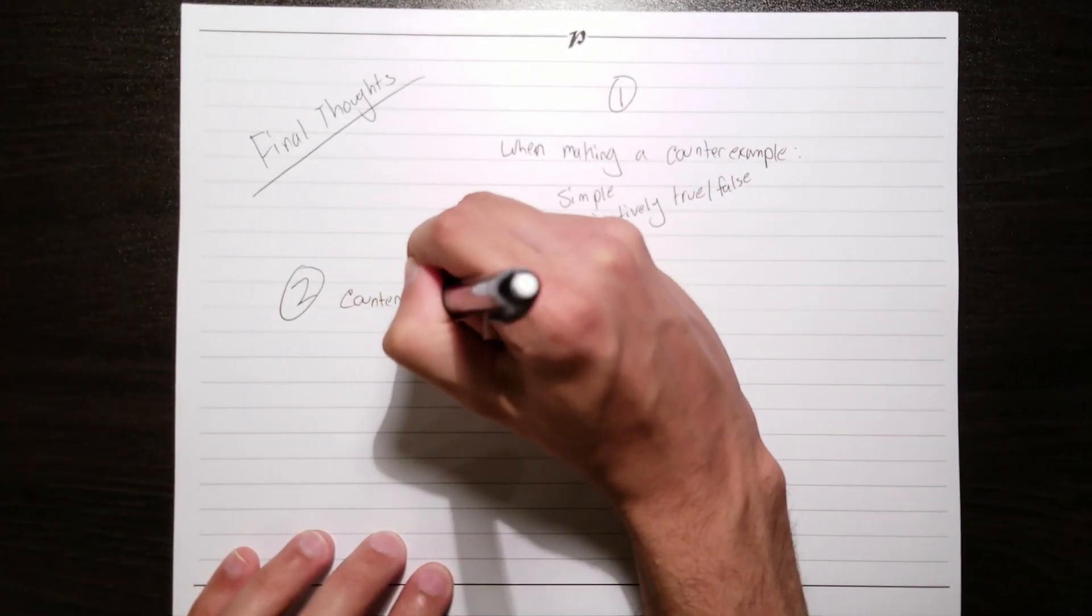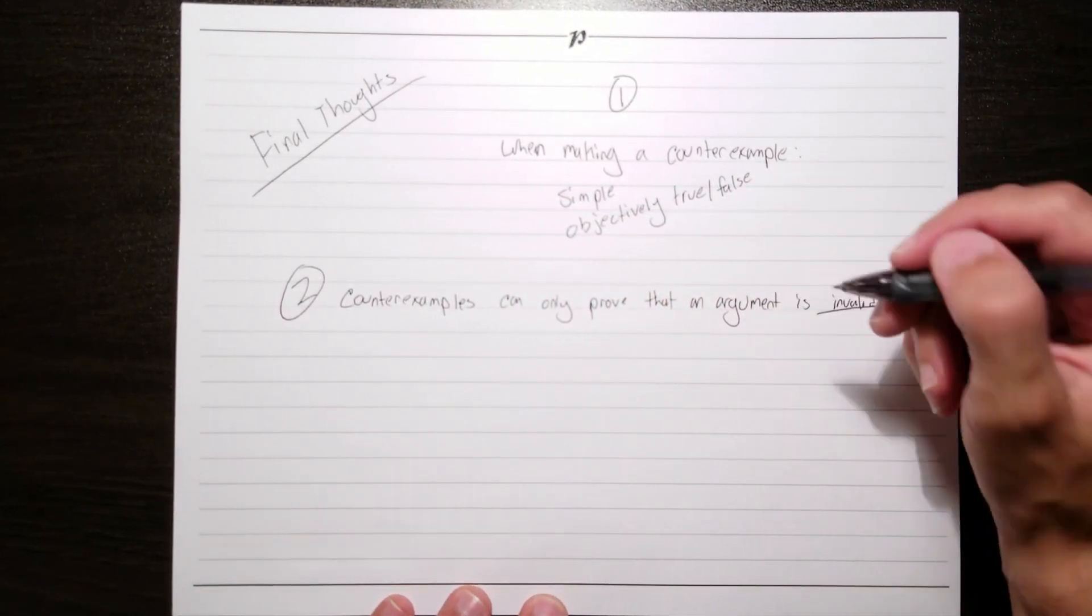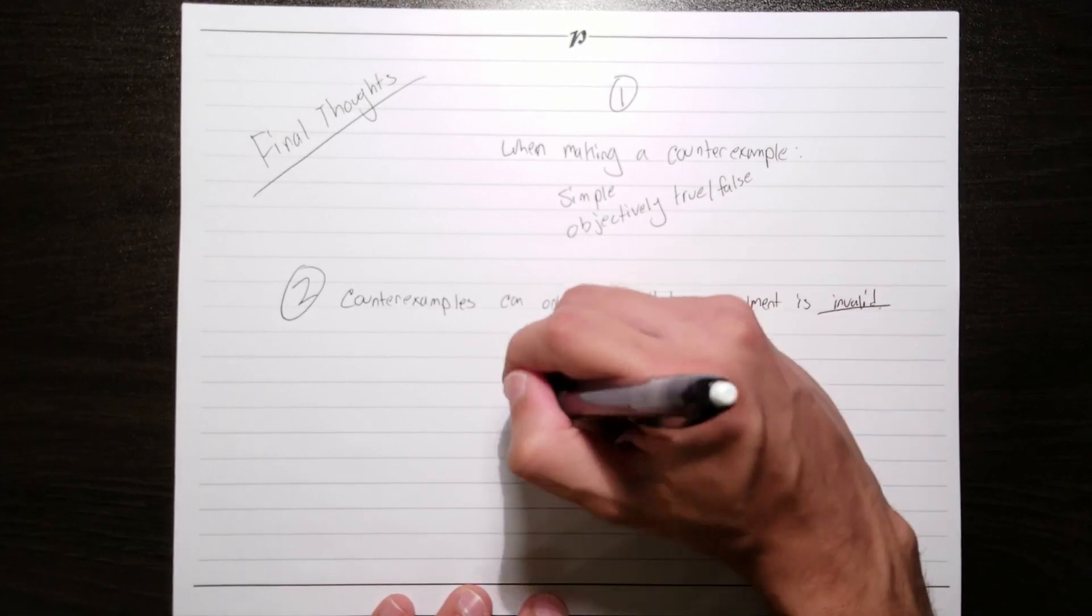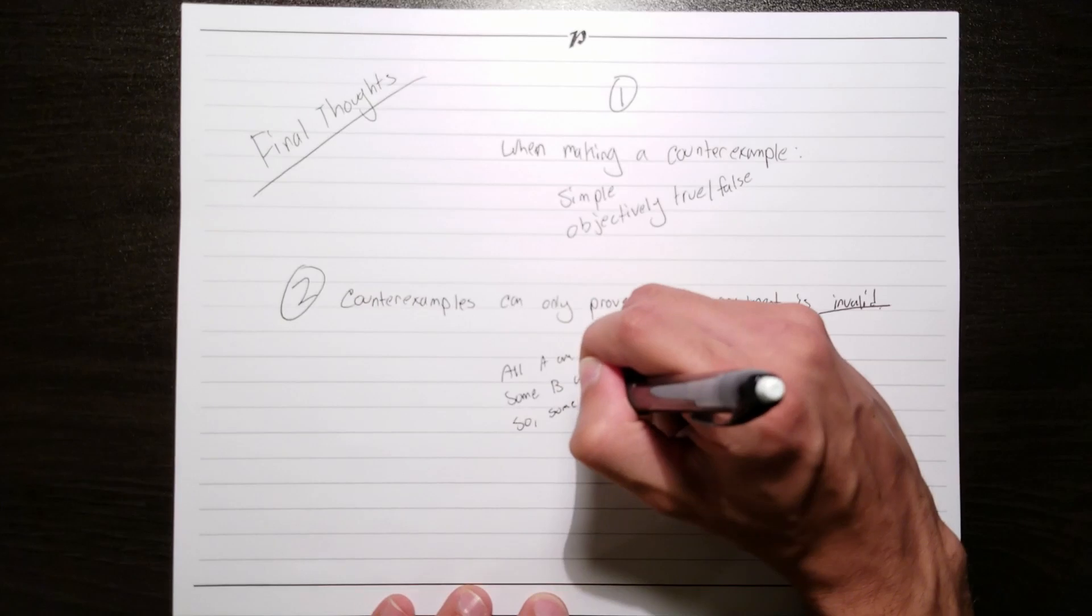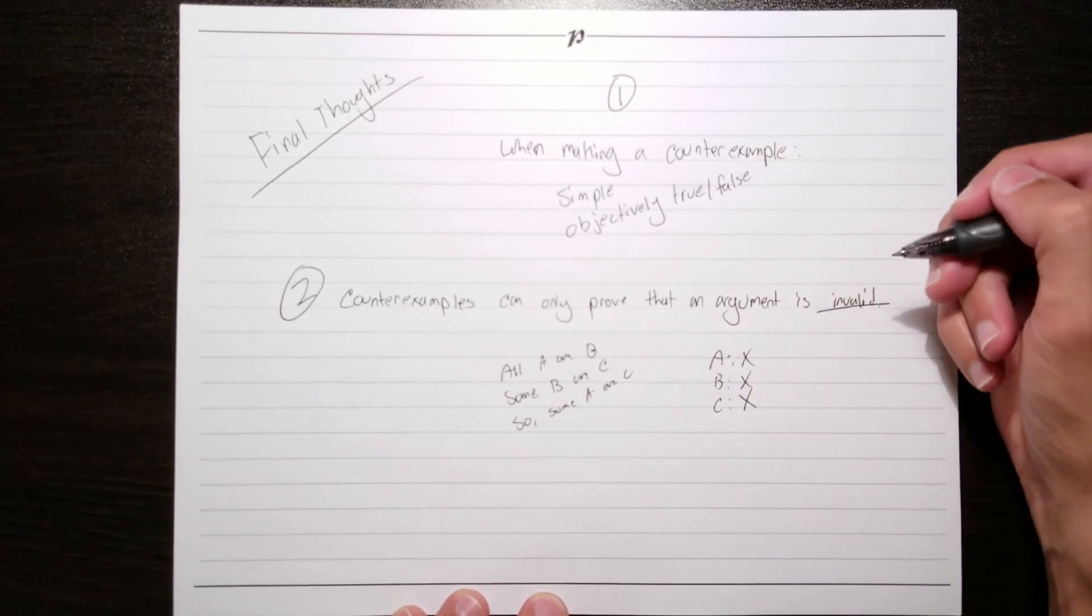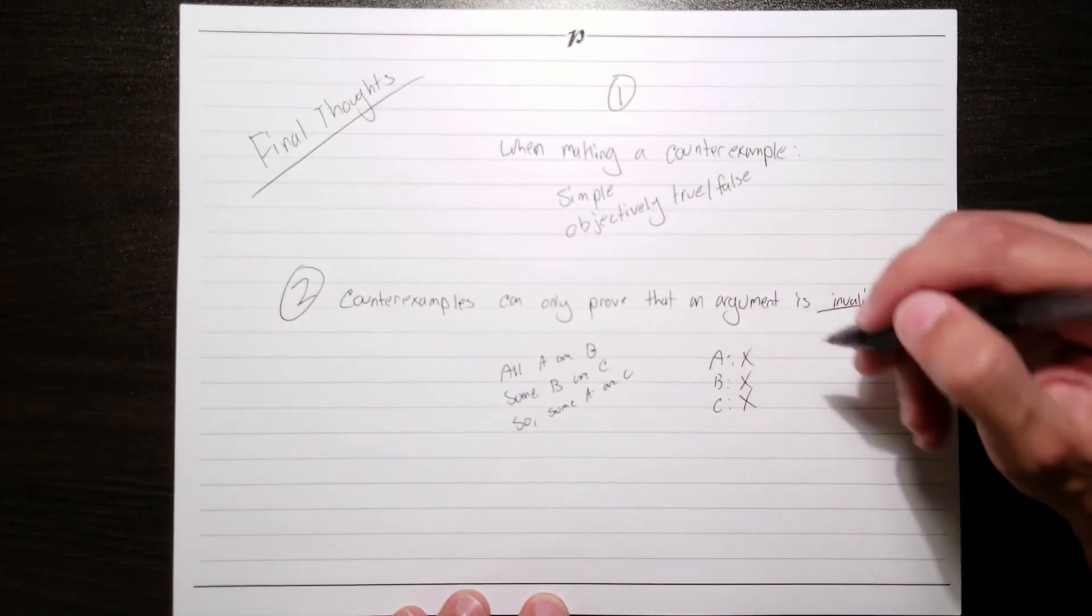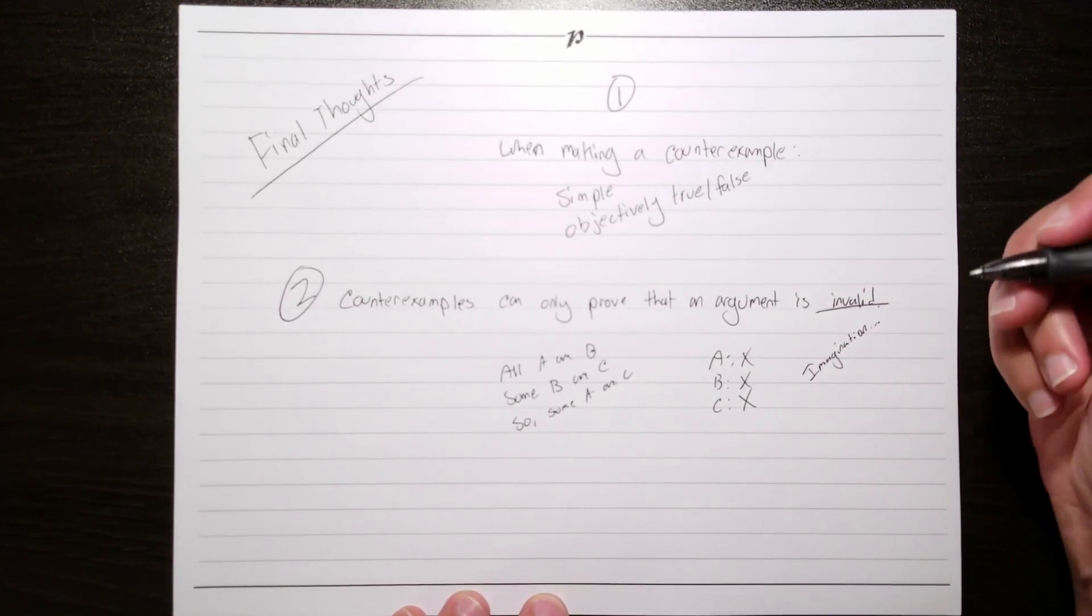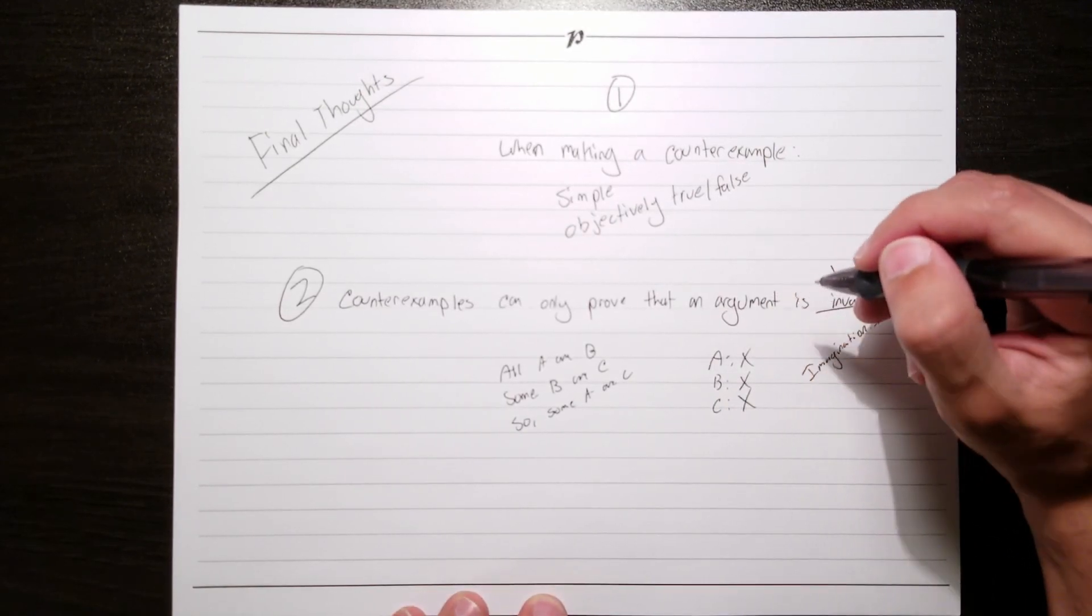Second, and I think this is really important, counterexamples can only prove that an argument is invalid. This is to say that counterexamples can't prove that arguments are valid. Now you might be asking, but what if you've tried to construct a counterexample for an argument and you just can't get it to work? Wouldn't that show that the argument is valid? And unfortunately the answer is no. The fact of the matter is, we may be busting our heads up against a wall trying to think of a counterexample, and it might just be the case that it's a failure of our imagination and not that the argument is valid. Having a tough time building a counterexample might suggest that the argument is valid, but the point is that it doesn't prove it.